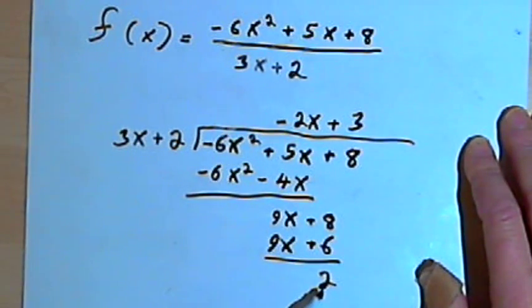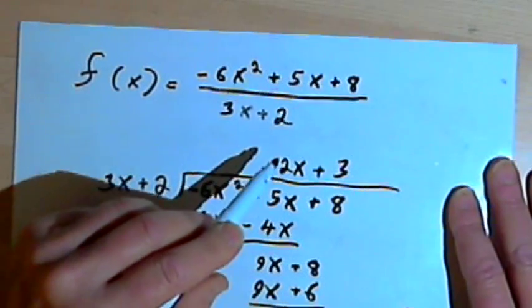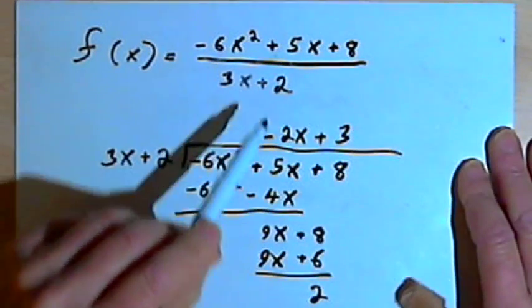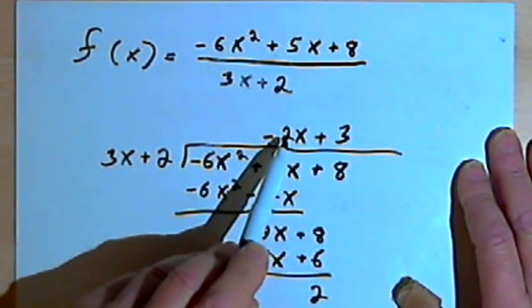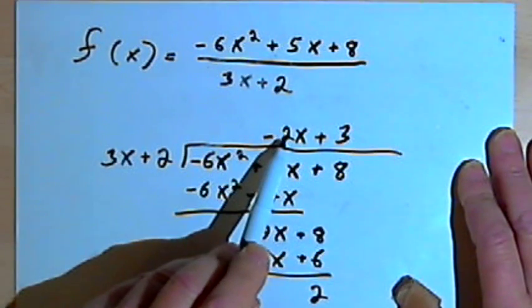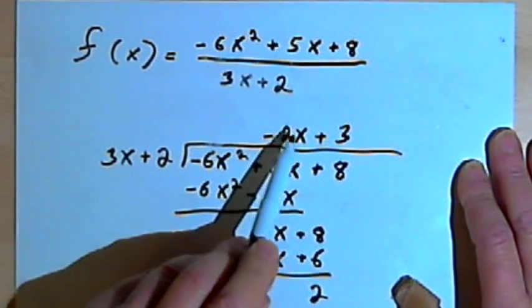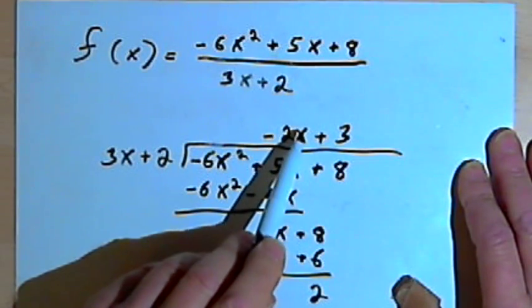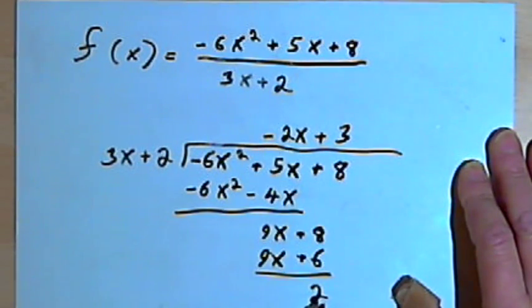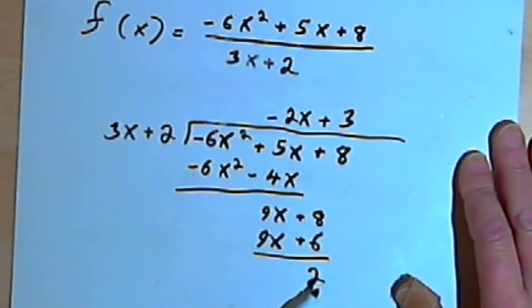I don't care about the remainder. My slant asymptote is going to be negative 2x plus 3 — the result of the division without the remainder.